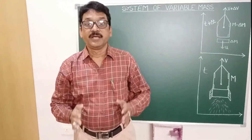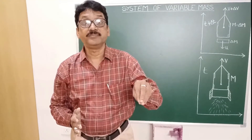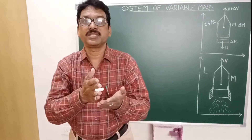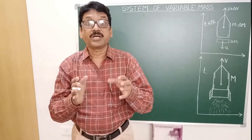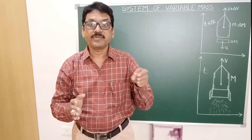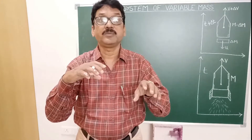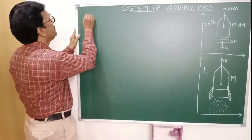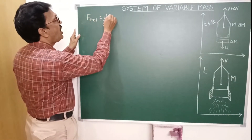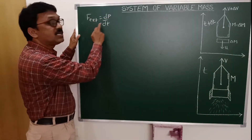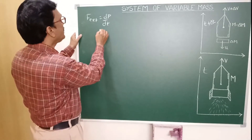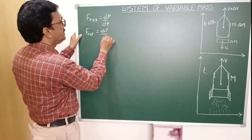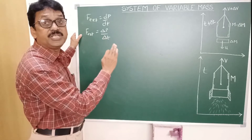Newton's second law states that the rate of change of momentum of a system is equal to the net external force acting on it, and the motion is along the direction of the force. That means f external is equal to the rate of change d by dt of momentum P. For a small interval of time, f external is equal to delta p by delta t. Delta p means the change in momentum.